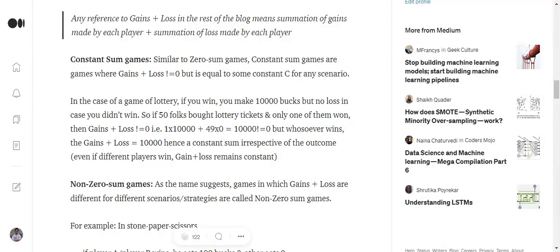In case of constant sum games, the number isn't equal to zero but equals to some constant c. All the losses plus all the gains equals to some constant c and not zero.